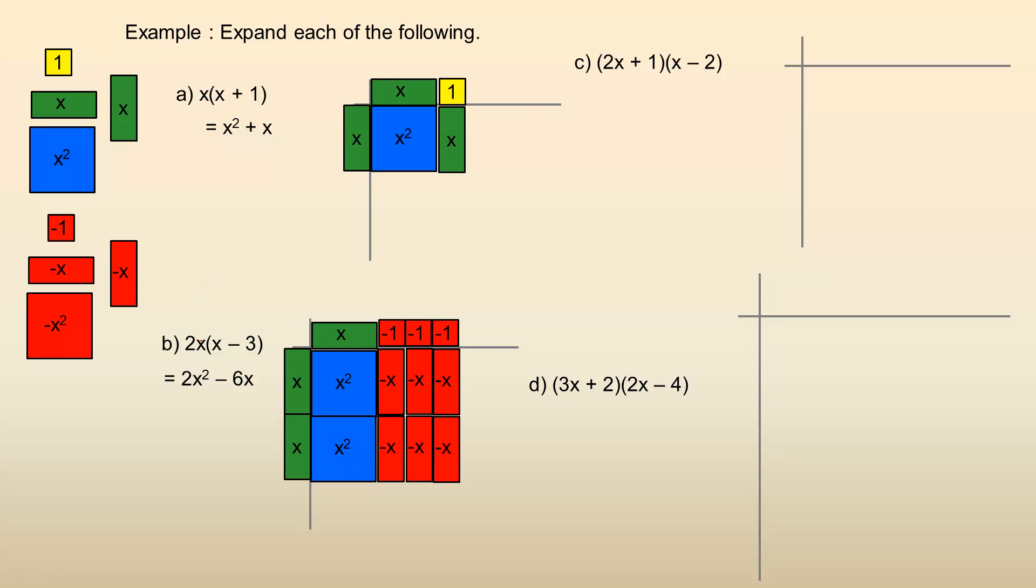And so again, algebraically, what we would do is if you multiply two X by X, you get this two X squared term. And then a phrase you'll hear too in multiplying this is distribute. We distribute the two X in and also multiply it by a negative three. Distribute means the same as to multiply that into the brackets. Two X times negative three is the minus six X here. So again, you can see two X squared are these two X squareds here. And then minus six X is all of this here.